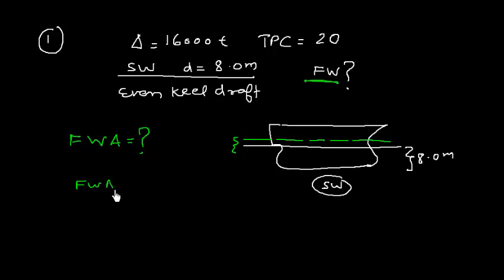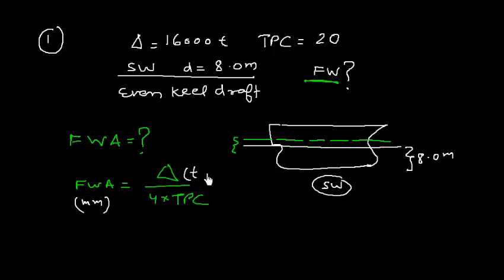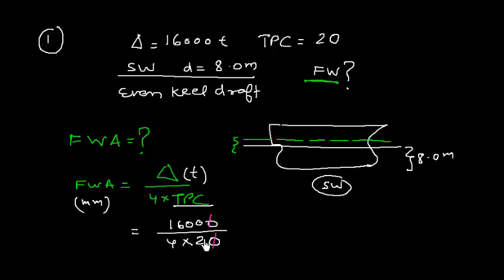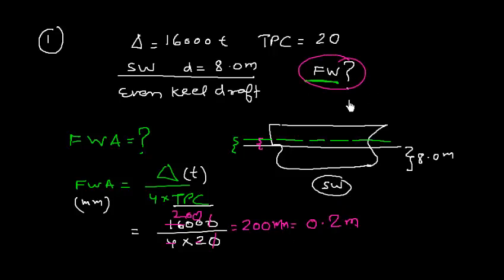The formula for fresh water allowance (FWA) is displacement divided by 4 times TPC, where FWA is in millimeters, displacement is in tons, and TPC is tons per centimeter. So FWA = 16,000 ÷ (4 × 20) = 200 mm, or 0.2 meters. The draft in fresh water will therefore be 8 + 0.2 = 8.2 meters.